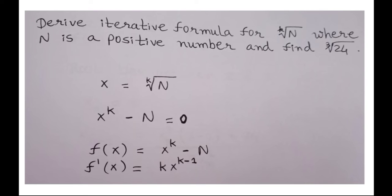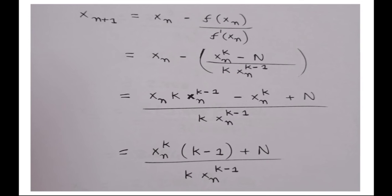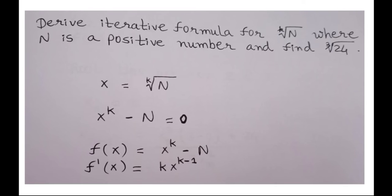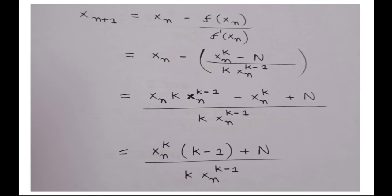Next example: derive the iterative formula for the kth root of n where n is a positive number, and find the cube root of 24. Here x equals kth root of n, so x raised to k equals n, giving x raised to k minus n equal to 0 as f of x. Finding f dash of x gives k times x raised to k minus 1. Using the Newton-Raphson formula with f of x(n) equal to x(n) raised to k minus n and f dash of x(n) as k times x(n) raised to k minus 1, we get the iteration formula: (x(n) raised to k times (k minus 1) plus n) divided by (k times x(n) raised to k minus 1).